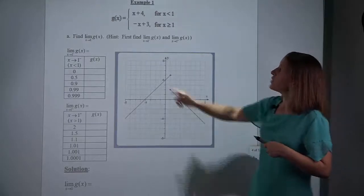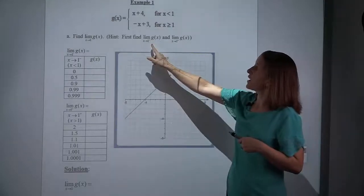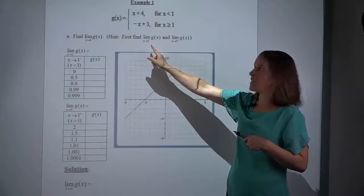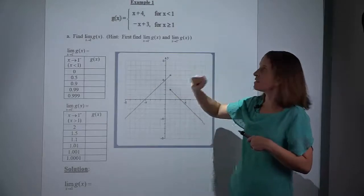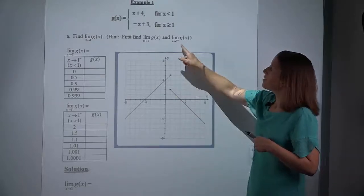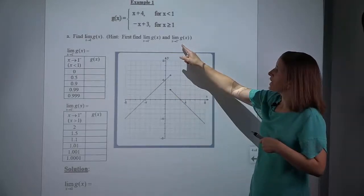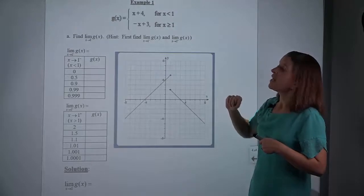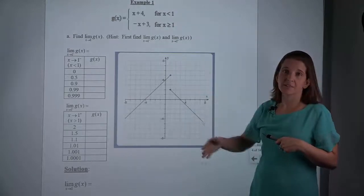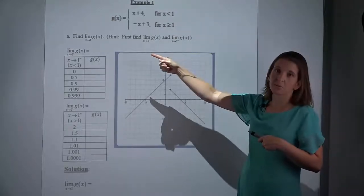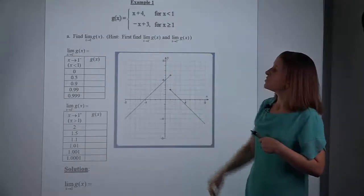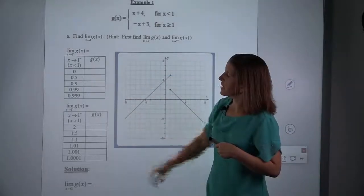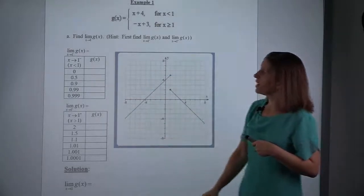To do that, we first have to find the limit from the left — the negative superscript means left — and from the right — the positive superscript — and then check that they're equal before we can really answer this question. Through the tables, I've broken it down that way for us.